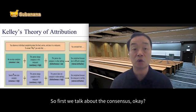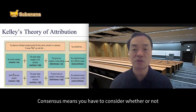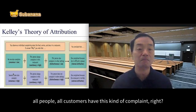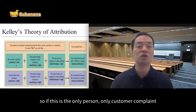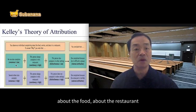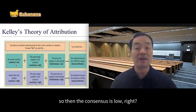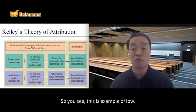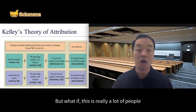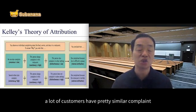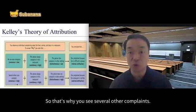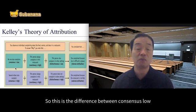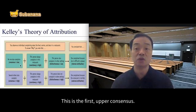First of all, we talk about consensus. Consensus means you have to consider whether or not all customers have this kind of complaint. If no one else complains, and this is the only customer complaining about the restaurant, then the consensus is low. But if a lot of customers have pretty similar complaints, then consensus is high. So that's the difference between low consensus and high consensus.